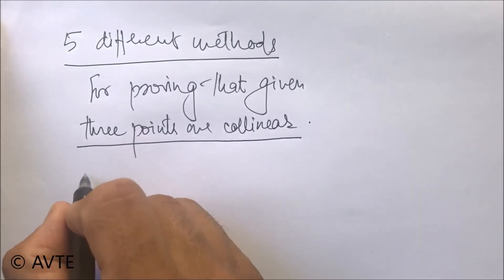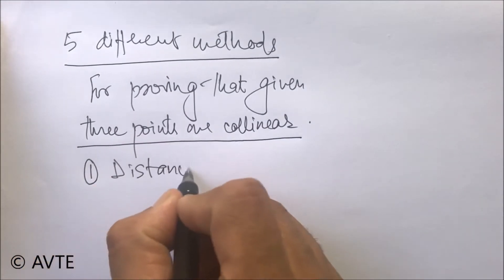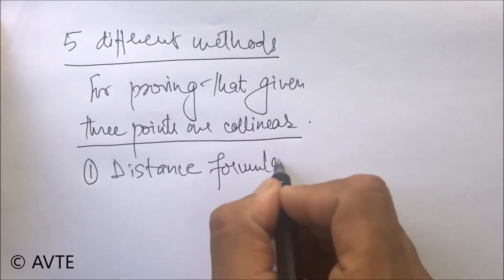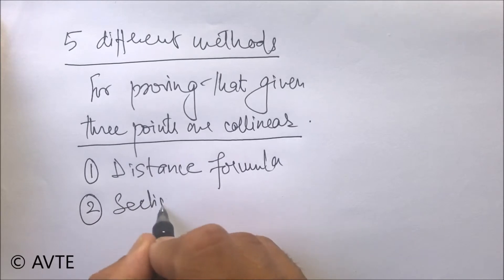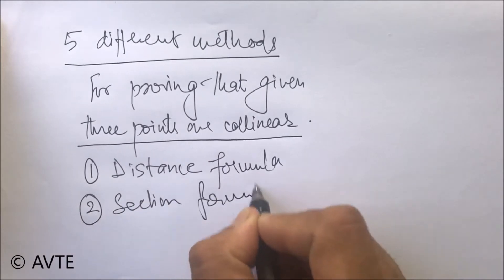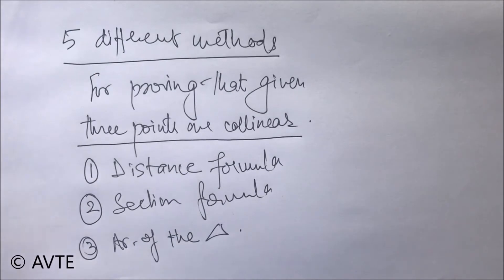So first three are distance formula, second using the section formula, and third using the area of the triangle. And in the second part we'll be explaining two more methods. So this is divided into two parts. In first section we'll be taking first three and in the second part we'll be taking the rest of the two methods.